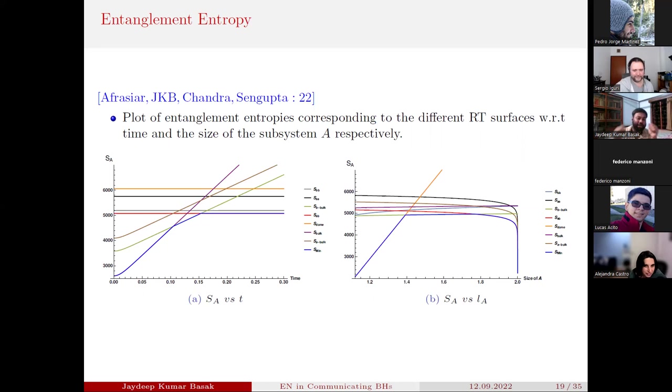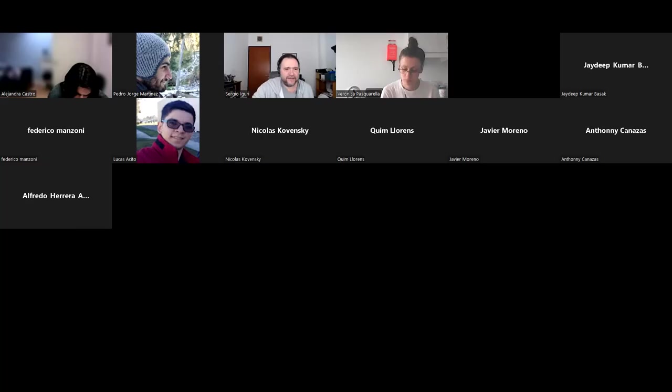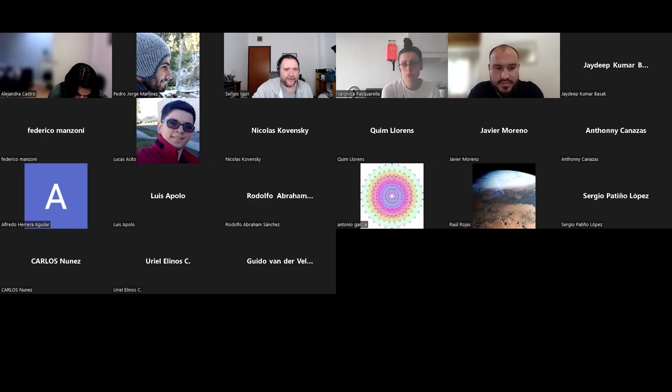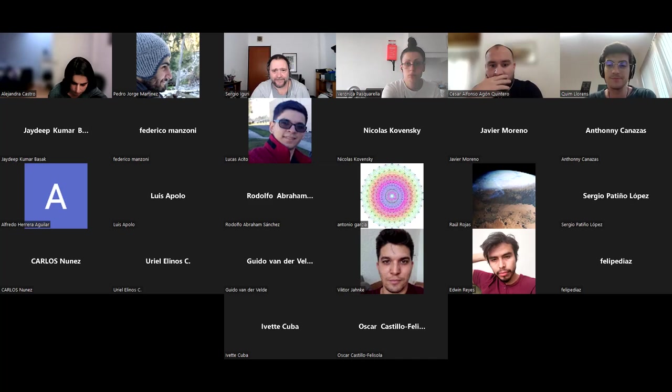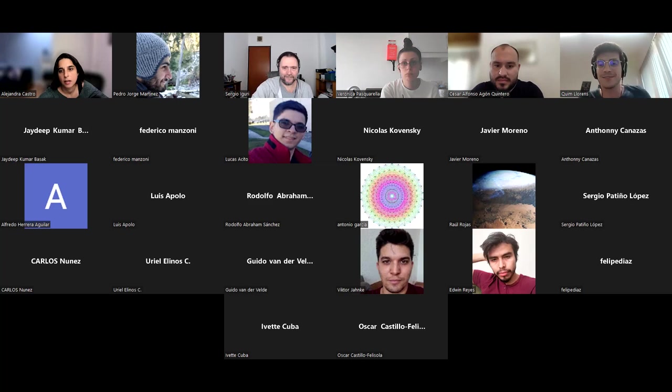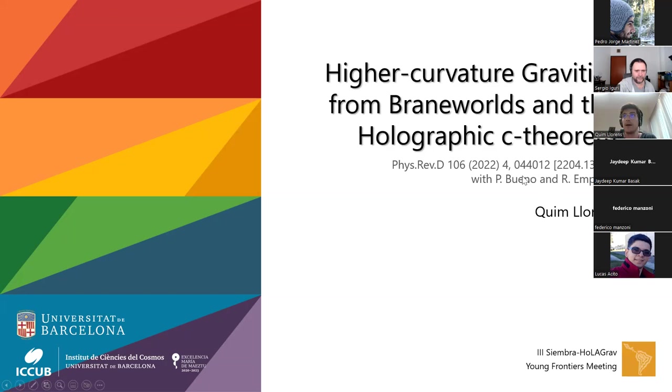We will replace the endpoints by Karch-Randall branes going into the AdS_3 geometry. We are considering the finite temperature case, that's why we're taking two copies of BCFT. That's how we are having an eternal AdS_3 black hole in the 3D bulk there. These Karch-Randall branes are going to cut my bulk into this part what we are seeing in the figure, and we have two induced black holes on the left-hand side and right-hand side. Here one can have one interval A and we can compute entanglement entropy there, and we can have seven possibilities, which is going to give us entanglement entropy Page curves.